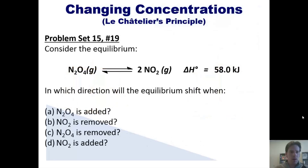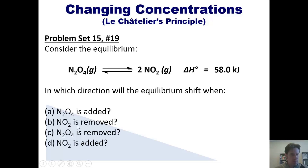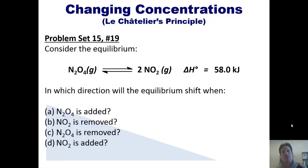Let's turn then to an example problem. Consider the equilibrium shown here between N2O4 and NO2, and answer each of the following questions: in which direction will the equilibrium shift if N2O4 is added, if NO2 is removed, if N2O4 is removed, and if NO2 is added? If you wish, you can pause the video here, think about this, then hit play while I explain the answers.